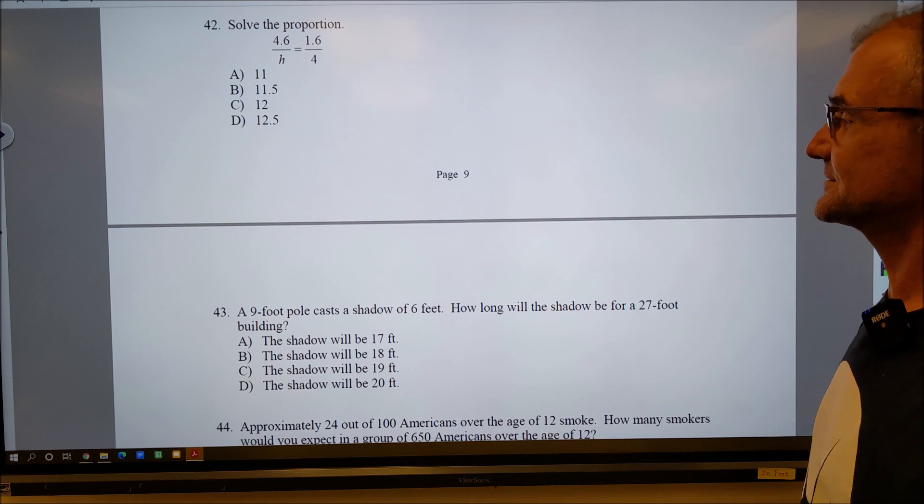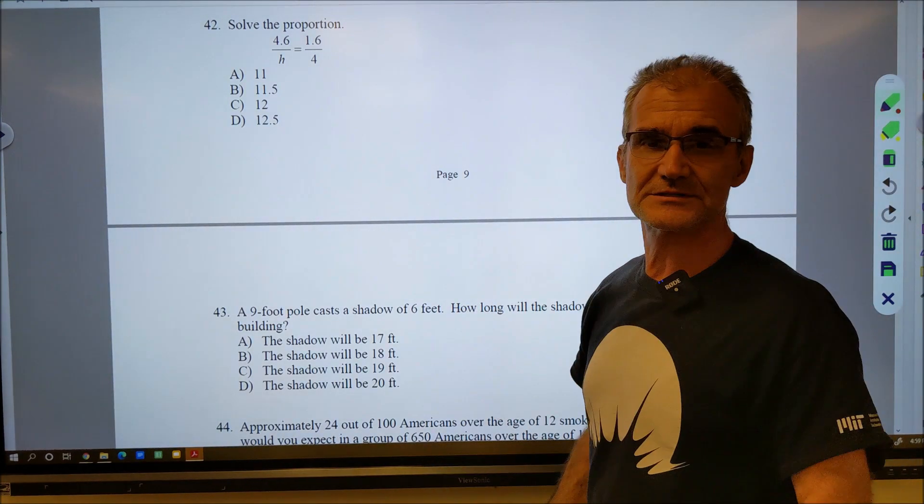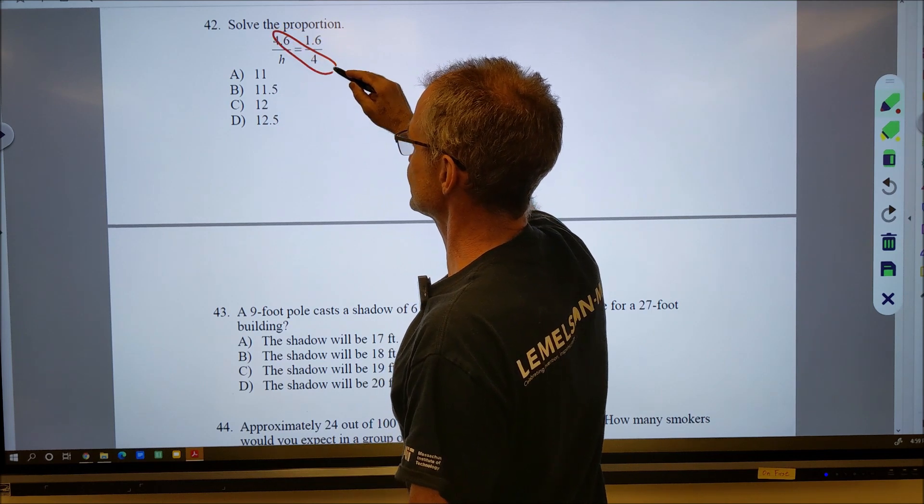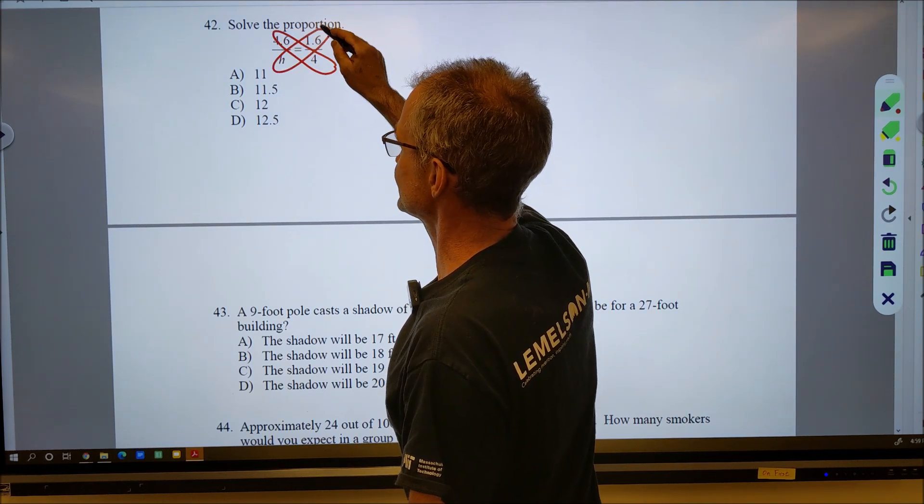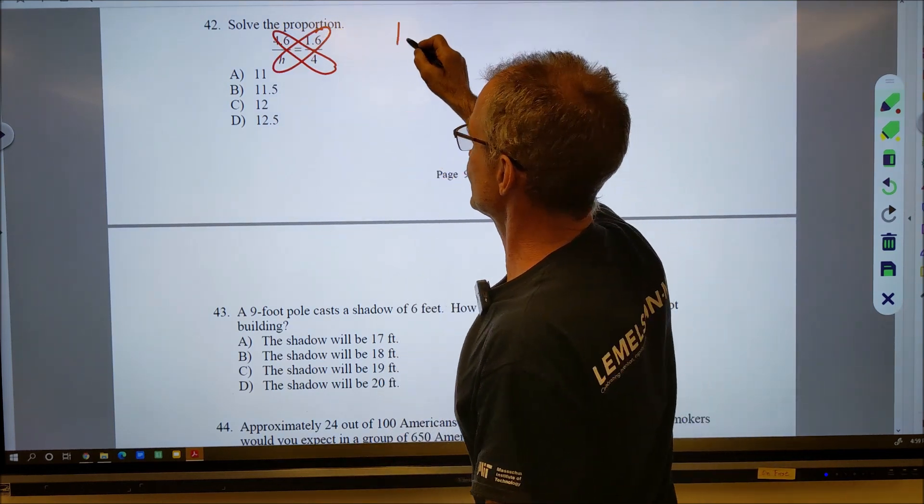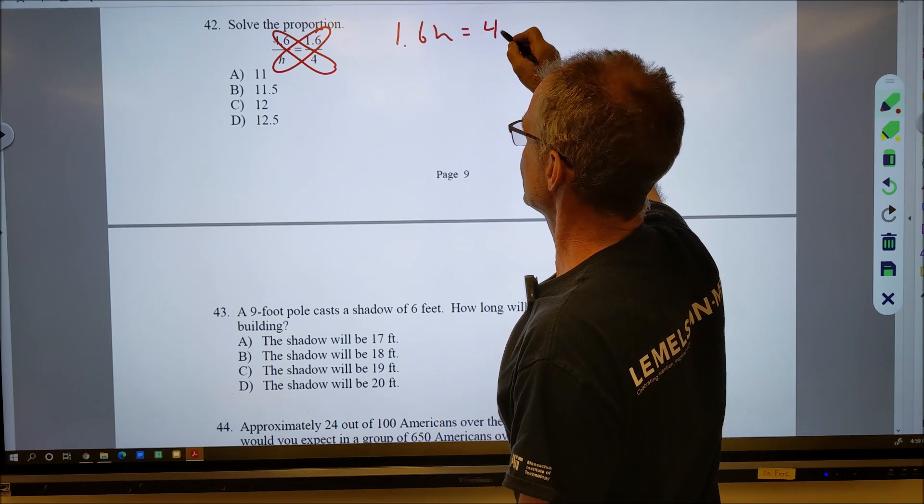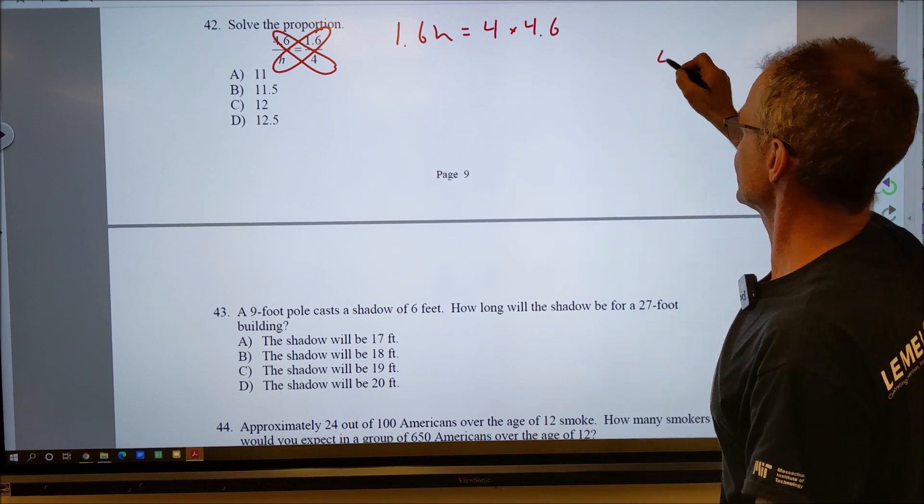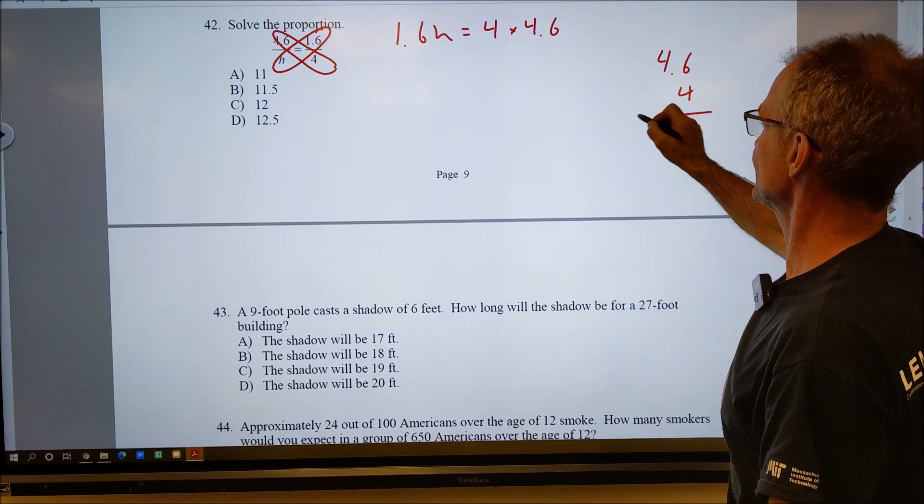Number 42: Solve the proportion. Best way to solve proportions is cross multiply. This times this is equal to... 4.6 is equal to 4 times 4.6. I'll do that over here: 4.6 times 4.